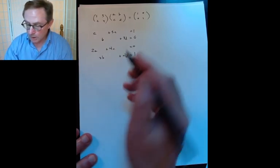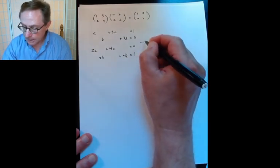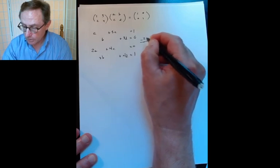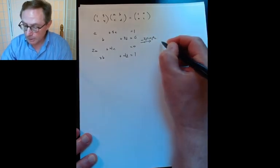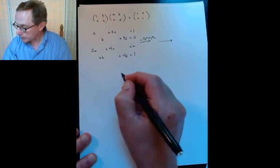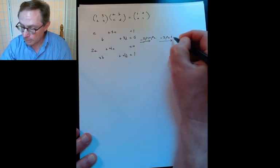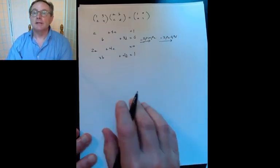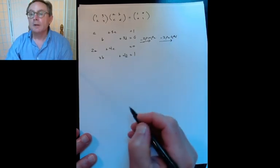Likewise, the 1 and the 3 combines with the B and the D to give me B plus 3D equals 0. And then you just proceed in that way, 2A plus 4C equals 0, and then the last one is the 2 and the 4 combined with the B and the D, so 2B plus 4D equals 1.